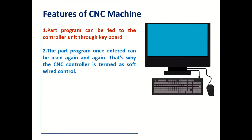The second feature is that the part program, once entered, can be used again and again — and that is why CNC control is termed as a soft wire control. As we know, in the CNC machine, memory is already there. We can store the program in that memory and use it again and again, and that is why it is also called soft wire control.